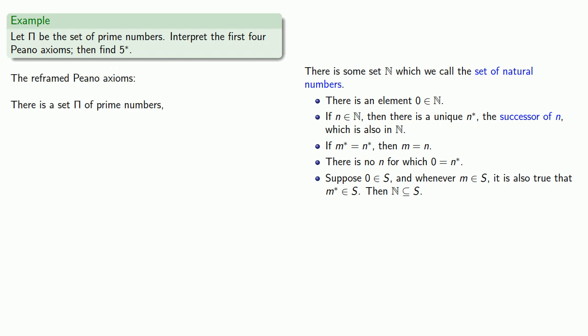Now, the first of the Peano axioms says there is an element zero in our set of natural numbers. Now, zero is not in the set of prime numbers, but remember it's a symbol with no particular meaning, and any other symbol can replace it. We'll figure out which symbol later.